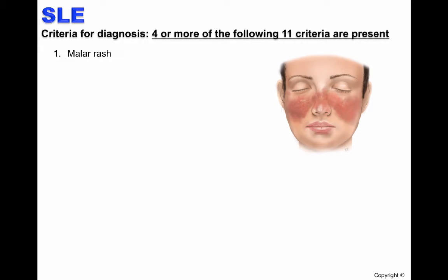The next criterion is discoid rash, which is erythematous raised patches and scaly plaques, which can result in scarring. Photosensitivity is a skin rash as a result of unusual reaction to sunlight. Oral ulcers can be observed, which are usually painless. Patients may also have arthritis.